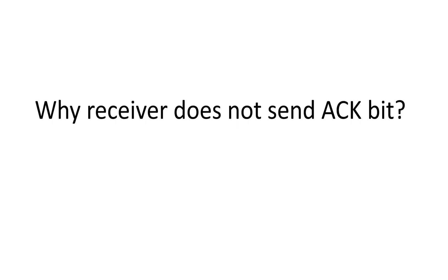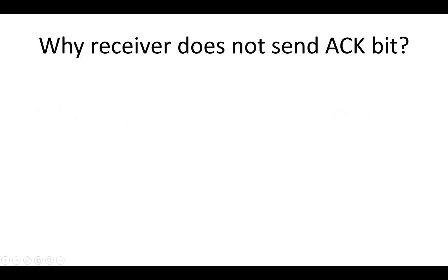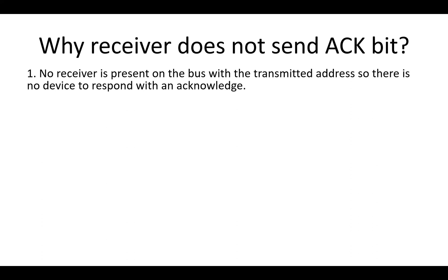Now a very important question arises: why does the receiver not send an ACK bit, such that its absence becomes a NACK? What are the conditions where the receiver is unable to send the acknowledge bit? I could identify five such conditions. The first condition is if the receiver is not present on the bus — there is no receiver on the I2C bus, so no one will send the ACK bit, and it becomes a NACK on the ninth clock cycle.